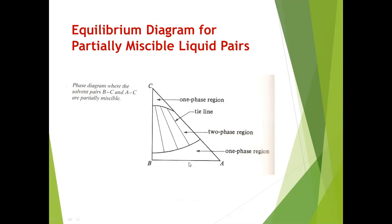We have a different equilibrium diagram for such partially miscible liquid pairs. We still have what we call a phase envelope — this is still the two-phase region — the envelope that separates the two-phase region from the one-phase region. Like the previous diagram which has only one one-phase region and one two-phase region, in here we have one two-phase region and two one-phase regions. We still have tie lines that signify that a point on the upper envelope is in equilibrium with a point on the lower phase envelope.